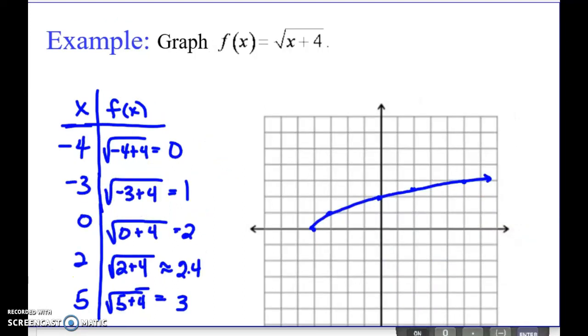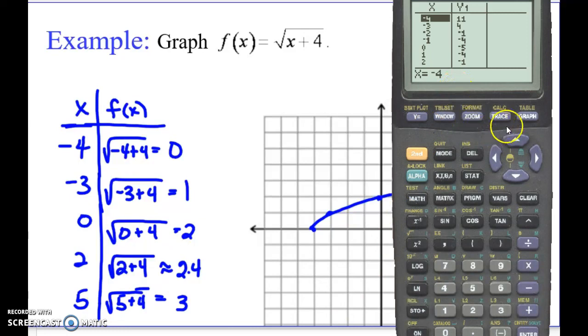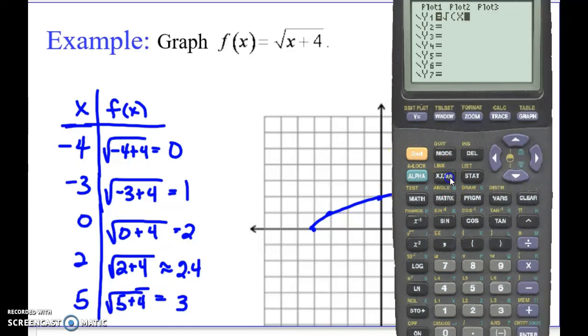So here's another one. F of x equals the square root of x plus 4. Again, we're going to go ahead and pick some negatives and some positives. On this one, it's really interesting when we go to put this in our calculator here. It's kind of nice because you get a preview of the picture, x plus 4.